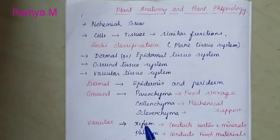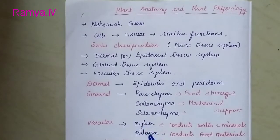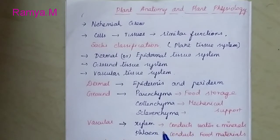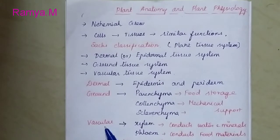It consists of two components: one is xylem and another one is phloem. Already you know about xylem and phloem. Xylem conducts water and minerals, and phloem conducts food materials to the different parts of the plant.